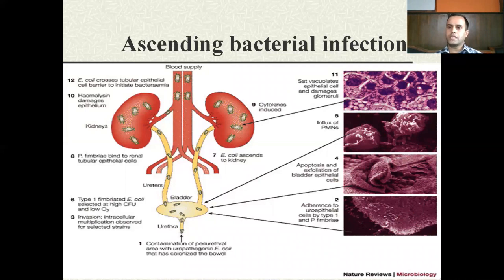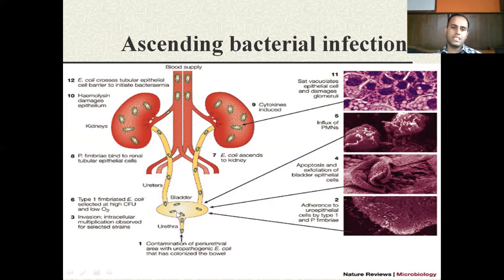Regarding ascending bacterial infections in UTIs: the contamination of the periurethral area with uropathogenic E. coli is a key example. E. coli have fimbriae which help them enter the urethra. The appendages present on E. coli cells help in attachment; uropathogens normally have either flagella or fimbriae that help in attachment to inner structures, and that is how they travel all the way up to the kidneys or into the bloodstream.